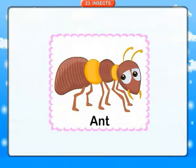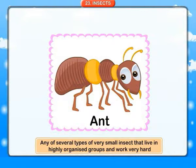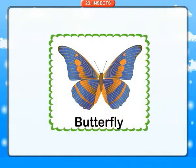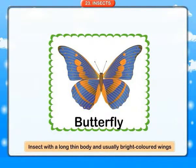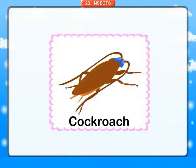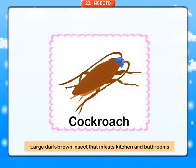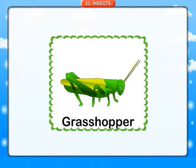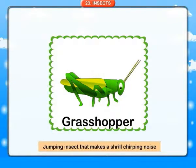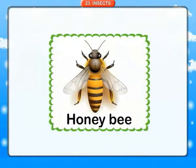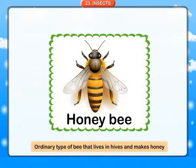Insects. Ant: any of several types of very small insect that live in highly organized groups and work very hard. Butterfly: an insect with a long thin body and usually bright colored wings. Cockroach: a large dark brown insect that infests kitchens and bathrooms. Grasshopper: a jumping insect that makes a shrill chirping noise. Honey bee: an ordinary type of bee that lives in hives and makes honey.